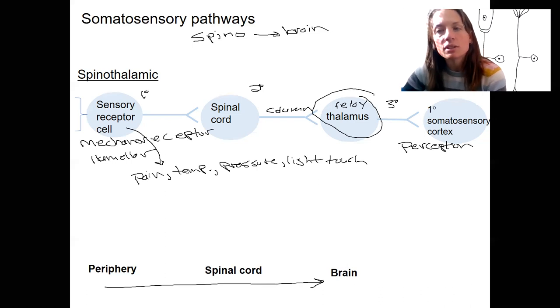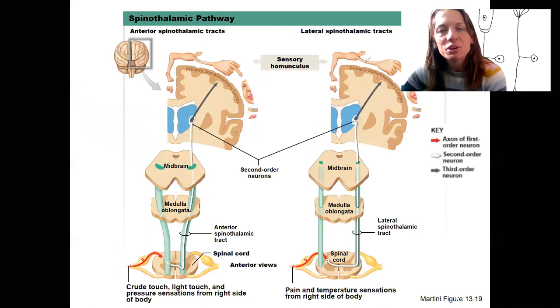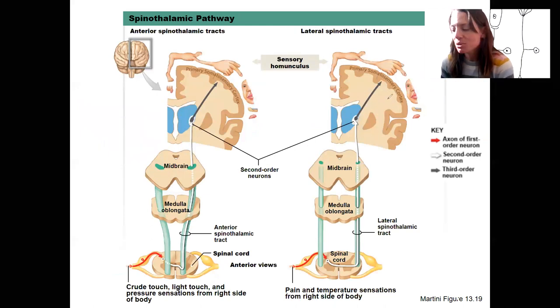This is what that looks like in terms of more complexity. There are actually two different sub-tracts to the spinothalamic tract: anterior and lateral. These actually carry different signals. You don't need to distinguish those for this class. One thing I like about this picture though is it shows that contralateral projections.